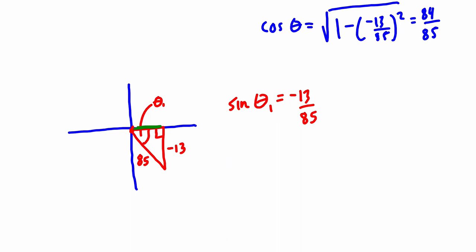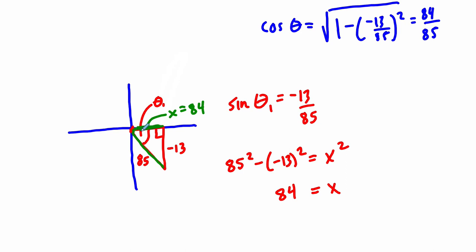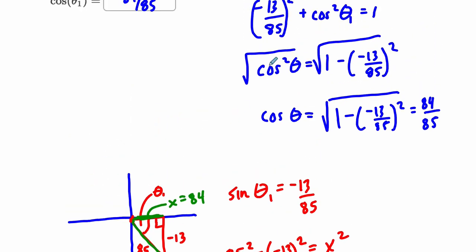So this is our sine value, and we just need to solve for our missing side using the Pythagorean theorem — because the Pythagorean theorem is connected to the Pythagorean identity, they're essentially the same thing. We'll call the missing side x: hypotenuse squared minus leg squared gives the other leg squared. We take the square root of this difference and get x = 84. They want to know what the cosine is — the cosine is just the adjacent side over the hypotenuse. It's positive 84 because x is going in a positive direction in the fourth quadrant. So the adjacent side over the hypotenuse is 84 over 85, which is exactly what we got using the formula.